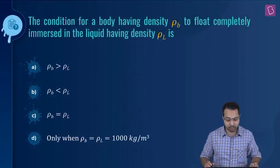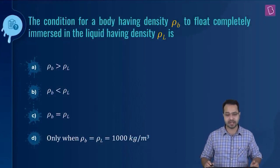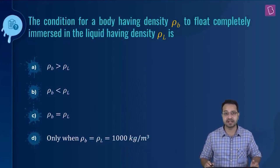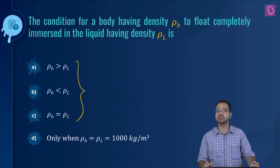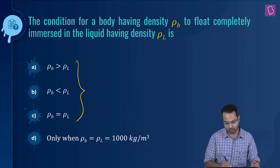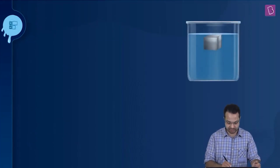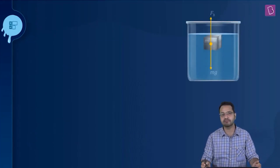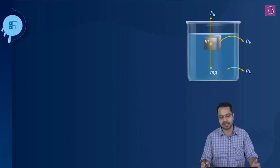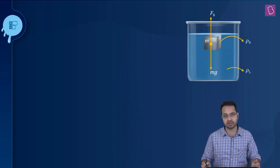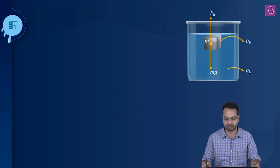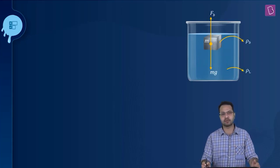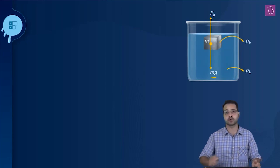The question asks for the condition for a body having density ρ_b to float completely immersed in a liquid having density ρ_l. We need to find the relationship between both densities. The situation is: there is a body whose density is ρ_b and a liquid whose density is ρ_l, and we have to find the condition where the body is completely immersed in the liquid and it is floating. Looking at the free body diagram, the weight of the object acts downwards.